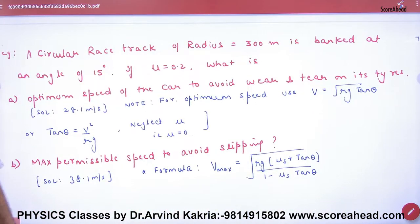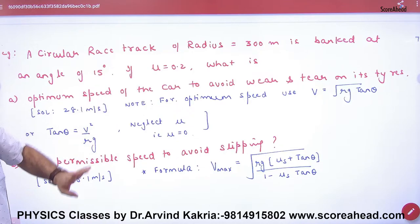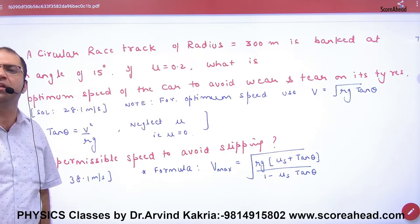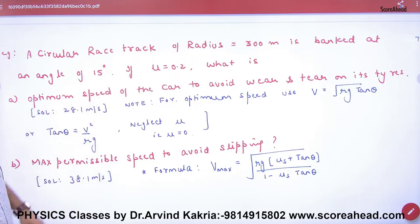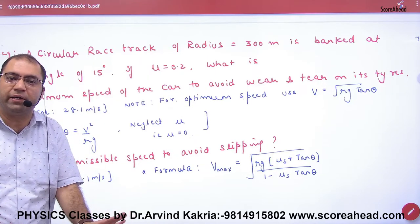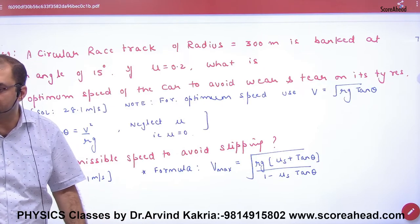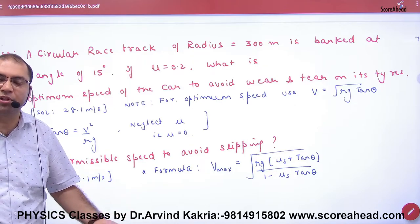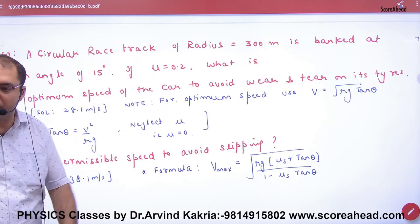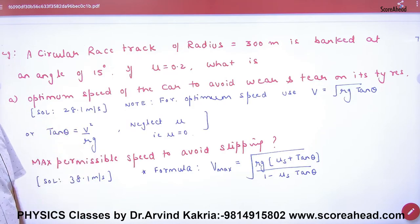Circular race track of radius 300 meter is banked at angle of 15 degree. What is the optimum speed of the car to avoid wear and tear? I don't have speed and what do I need? Then what do I do?